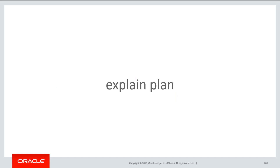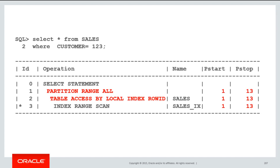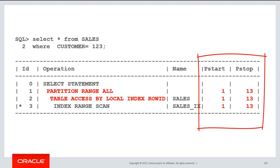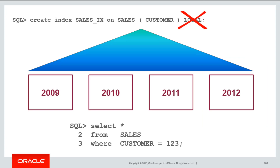You can see that in the execution plan when you start seeing these multiple partition traversals. Yes, I'm doing an index lookup, but you can see in this case I was actually scanning 13 different partitions to find that customer information. What if that index was a global index? Now when I'm going to find a particular customer, it's all co-located in a single index structure. In this case, a global index is perhaps the best option if customer queries are a vital part of your application.